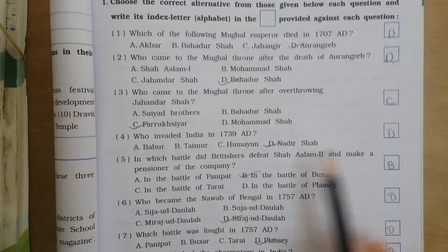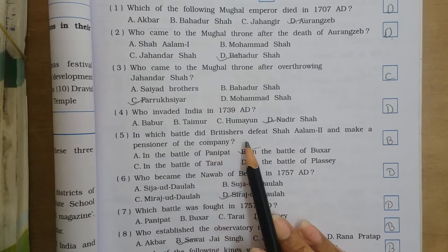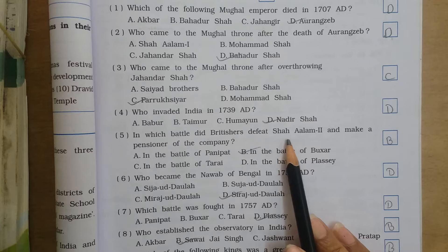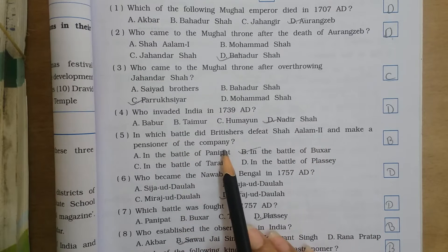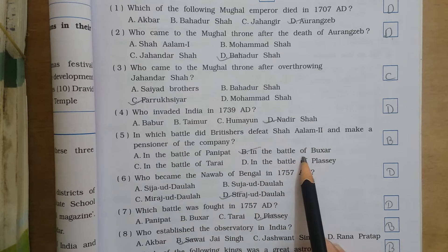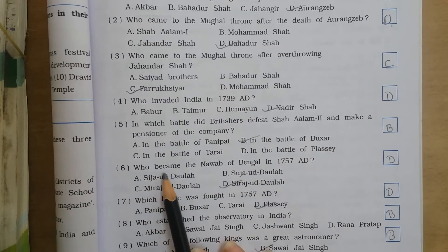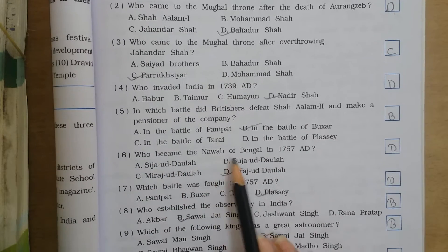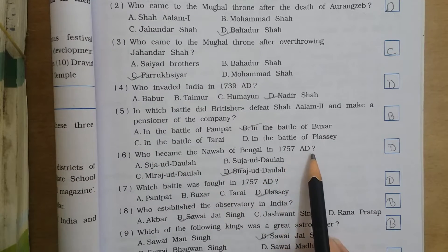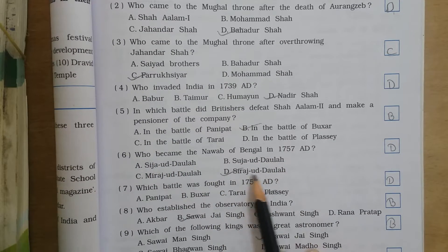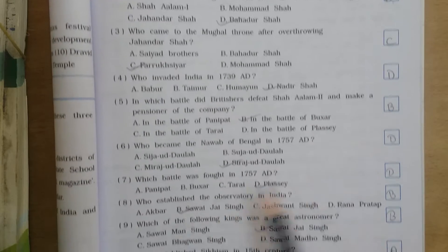In which battle did the British defeat Shah Alam II and make him a pensioner of the company? It was the Battle of Buxar. The answer is B. Who became the Nawab of Bengal in 1757 AD? Siraj ud-Daulah. The answer is D.